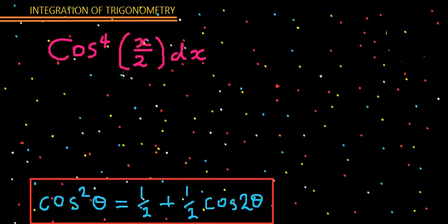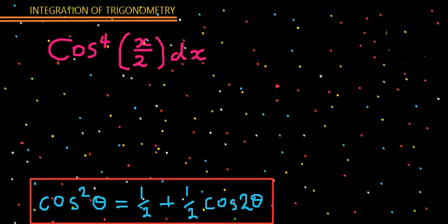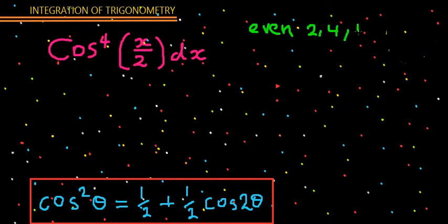When integrating this one, you have to use this rule because it is raised to a power of 4, which is an even number. For even numbers, you always use this rule. An even number is any number that is divisible by two — numbers like 2, 4, 6, and so on.